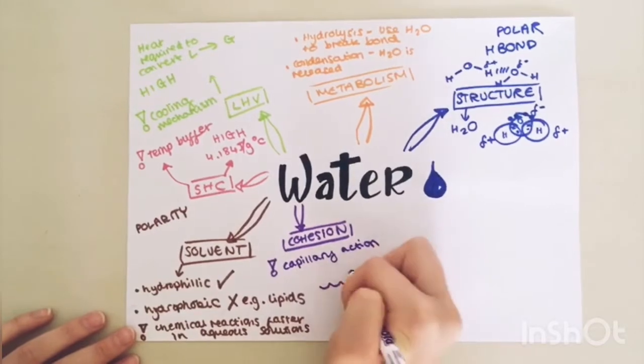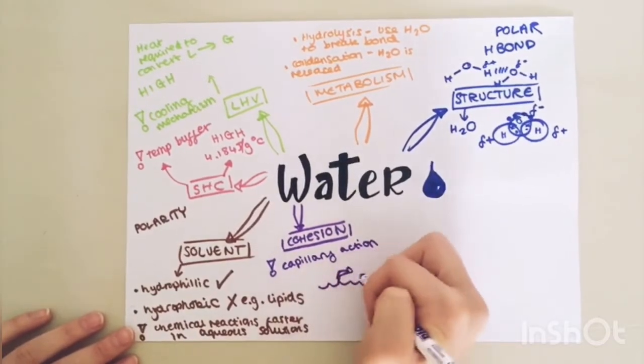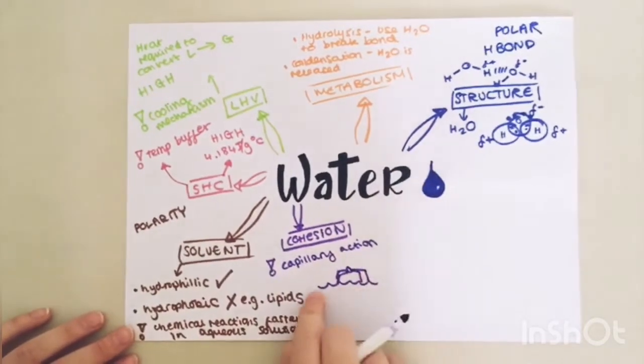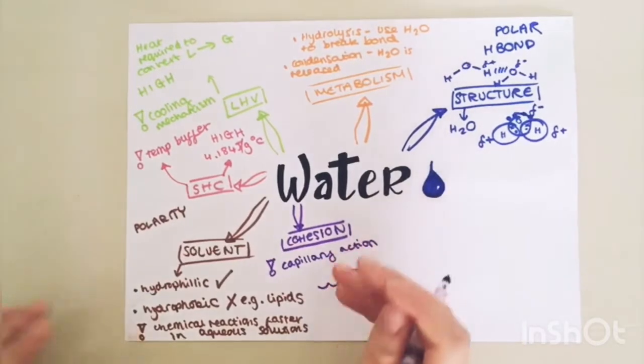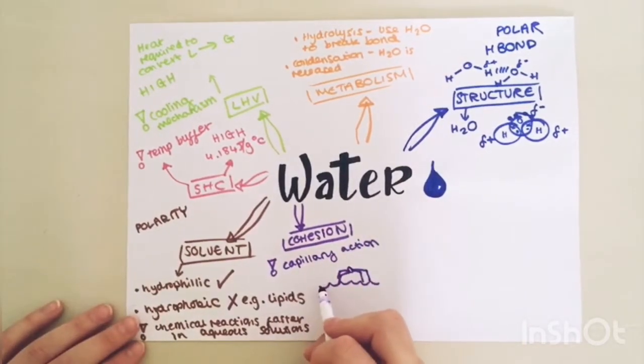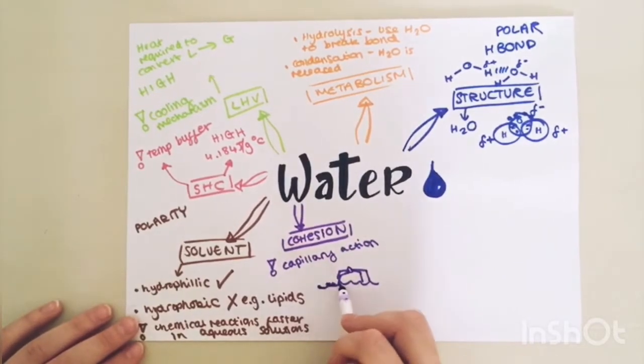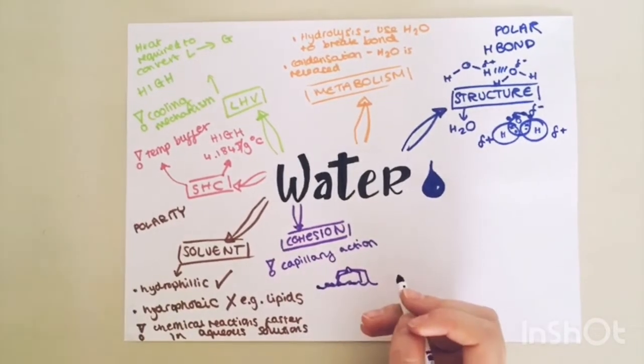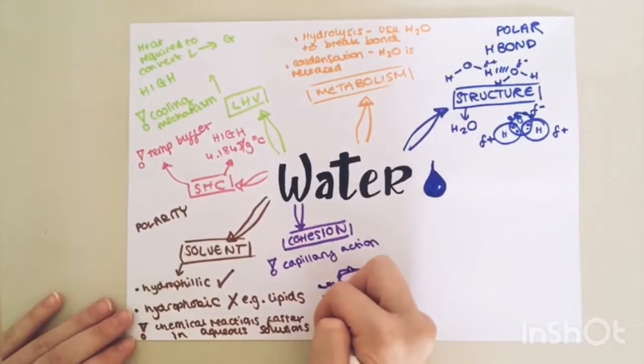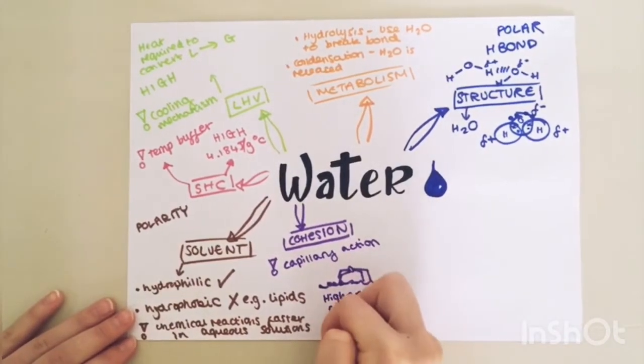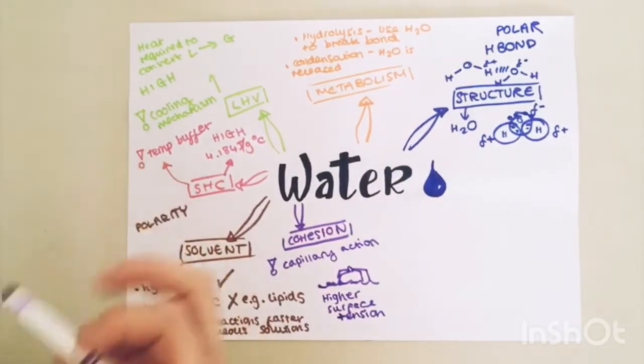Also, if you think about pond skaters on the surface of water, the reason they can walk on the surface of the water is because of the strong cohesion on this top layer. Because there's no water molecules above this top layer, they have stronger cohesive forces between them, allowing this top layer to have a higher surface tension. And that's what allows pond skaters to walk on the water.